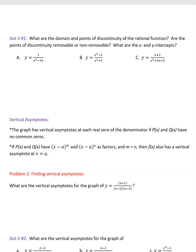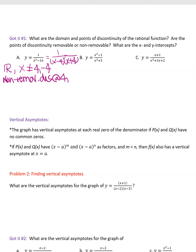Practice: factor 1/((x − 4)(x + 4)). The domain is all real numbers except x = 4 and x = −4. Nothing cancels, so these are non-removable discontinuity points at x = 4 and x = −4.